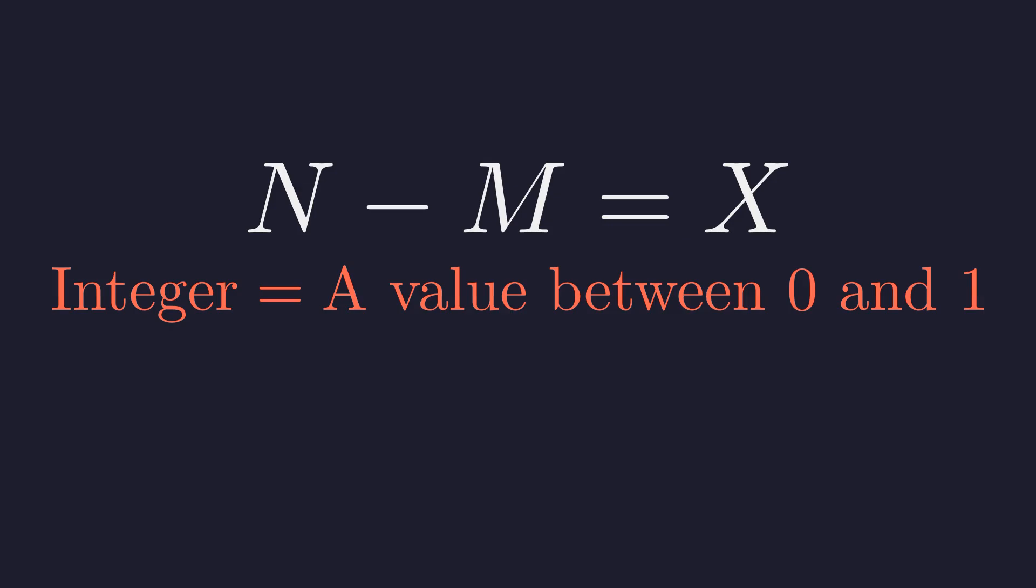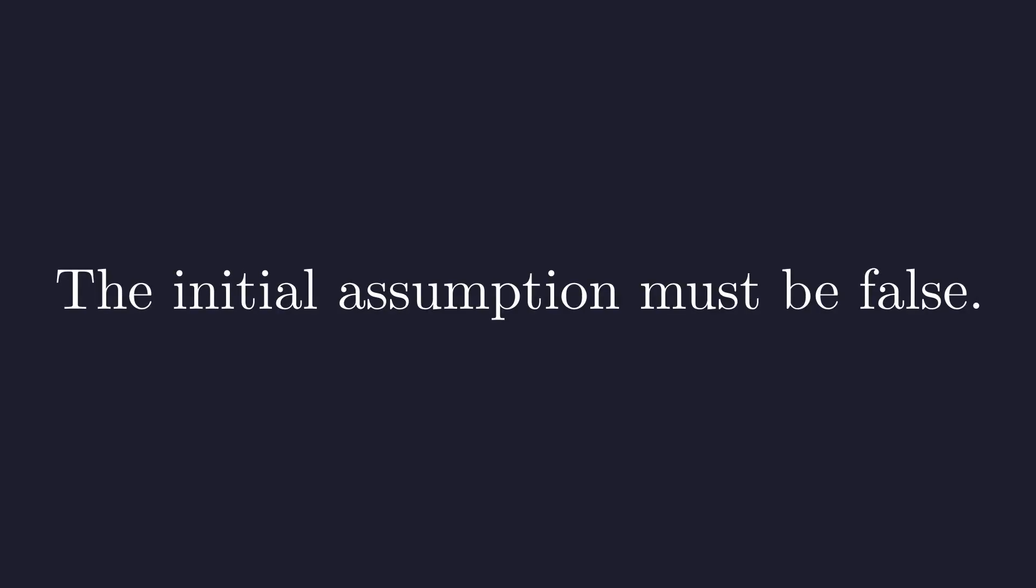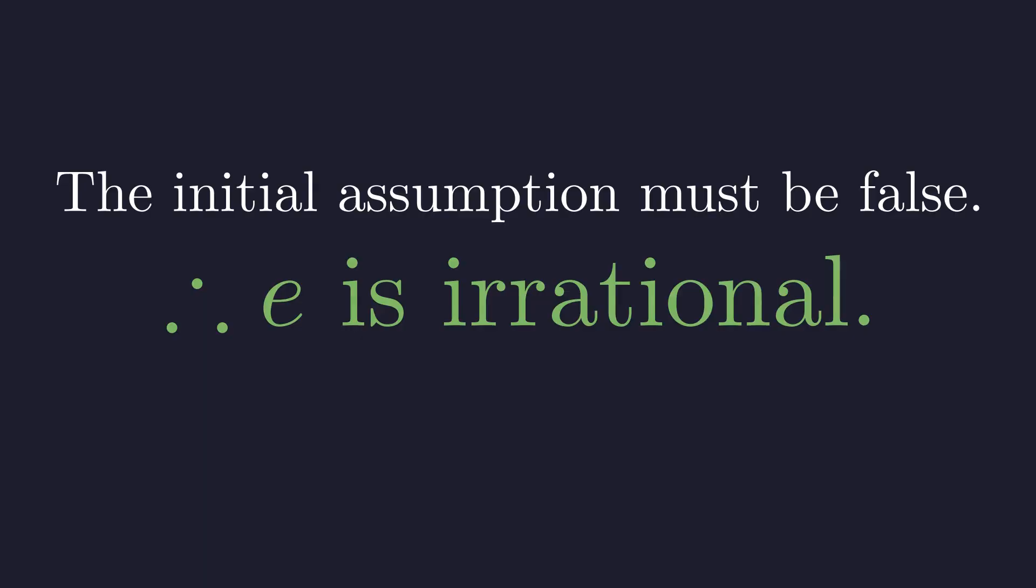This contradiction is the punchline of our proof. The only way to resolve this logical absurdity is to conclude that our starting point, our very first assumption, must have been false. Therefore, E cannot be expressed as a fraction of two integers. The number E is irrational. This completes the proof.